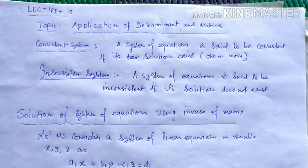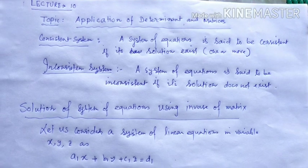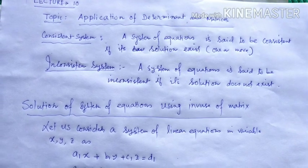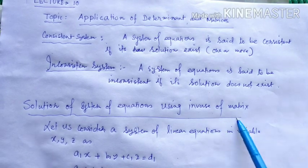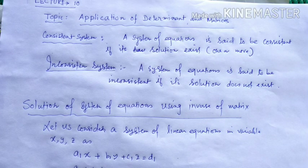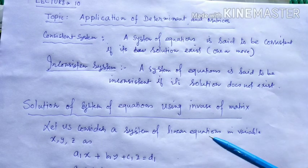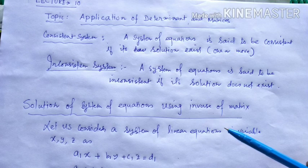Now we are going to apply matrices and determinants to find the solution of a system of equations using the inverse of a matrix. To find the inverse of a matrix, you must know about the determinant as well as the adjoint. So here both the determinant and matrices are used to find the solution of a system of equations.